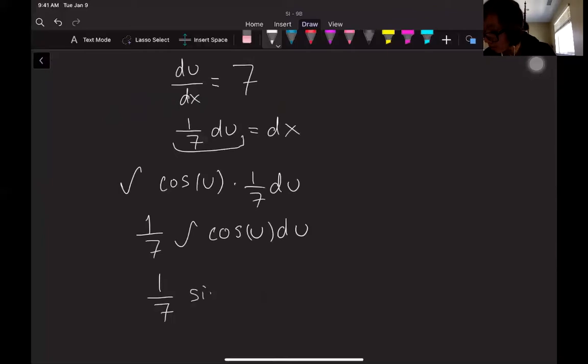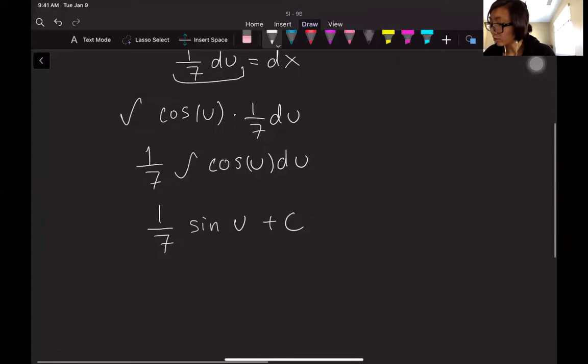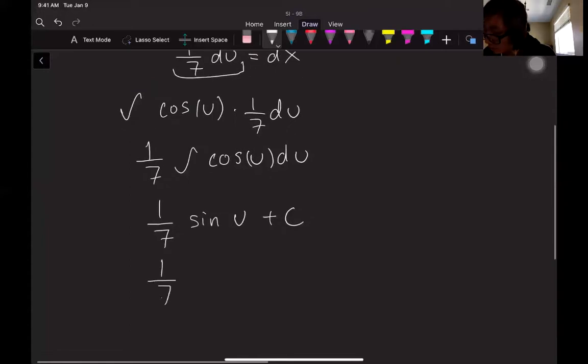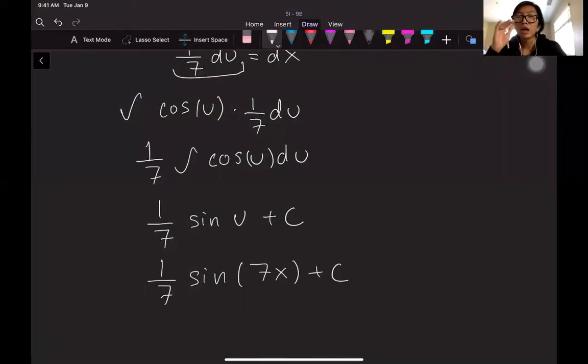have 1 over 7 sine of u plus c. Then I just have to plug that u back in, so then I get 1 over 7 sine of 7x plus c.